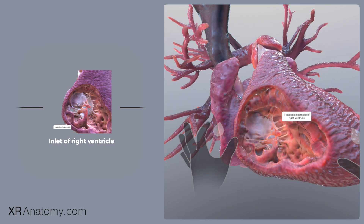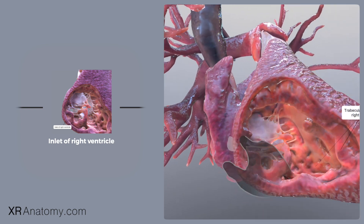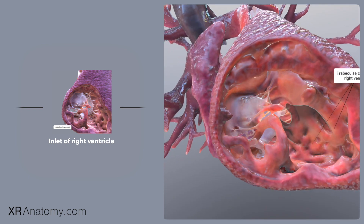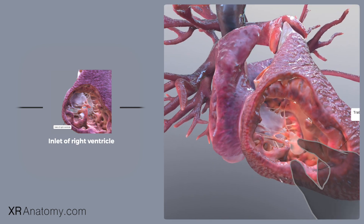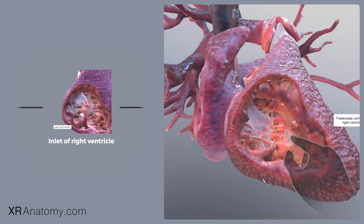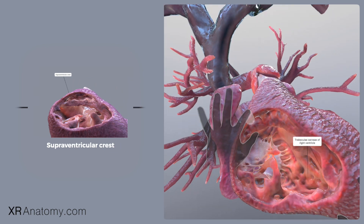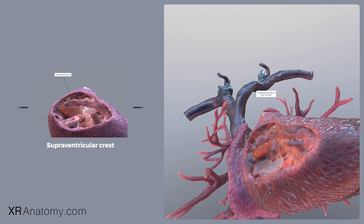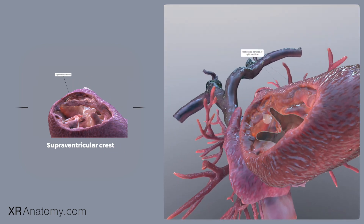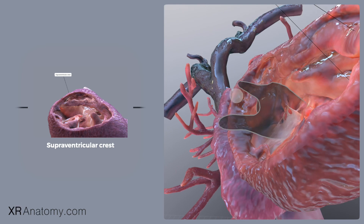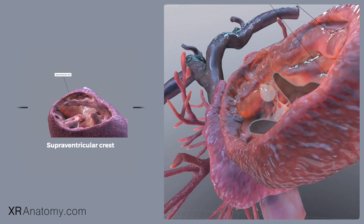The inlet of the right ventricle is the part of the ventricle that contains the tricuspid valve with its cordae and papillary muscles. Right above the tricuspid valve, there is a prominent muscular ridge within the right ventricle, known as the supraventricular crest.